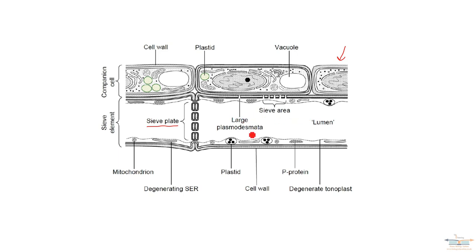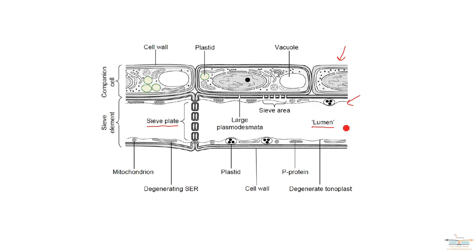The sieve tube elements are living cells and they're there to transport sugars and amino acids, so they need a lumen. The lumen is created by the cytoplasm being pushed to the sides of the sieve tube element, giving rise to a larger lumen. In the cytoplasm there are some organelles, but they're generally not functional — they're underdeveloped or undergoing degradation.